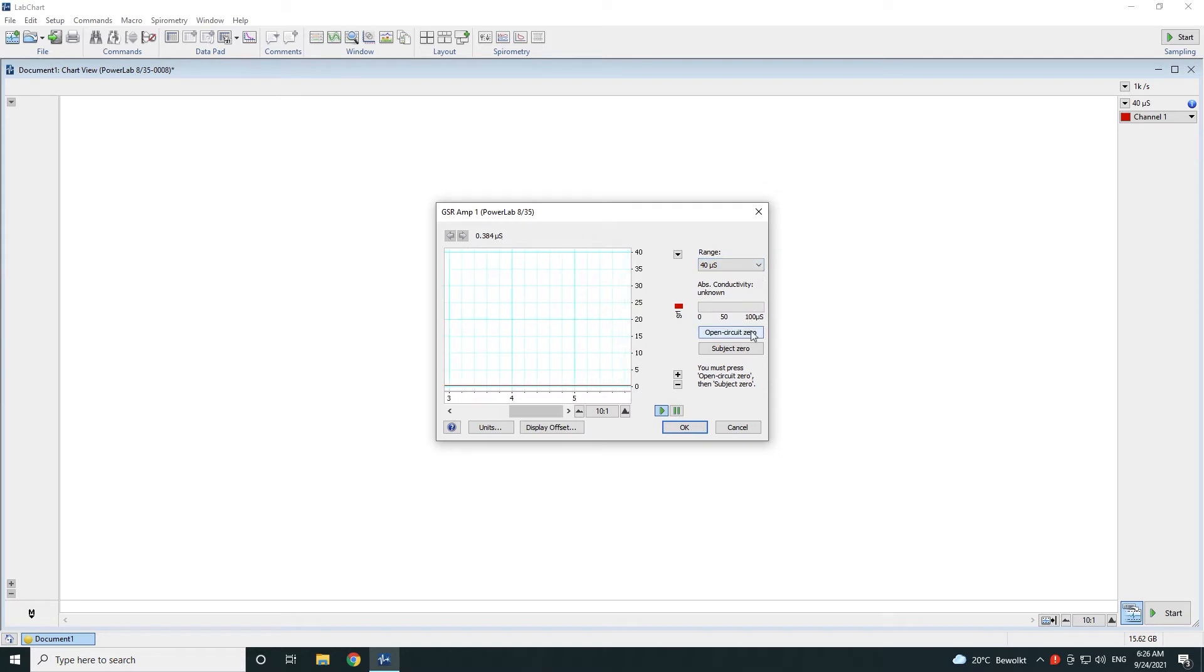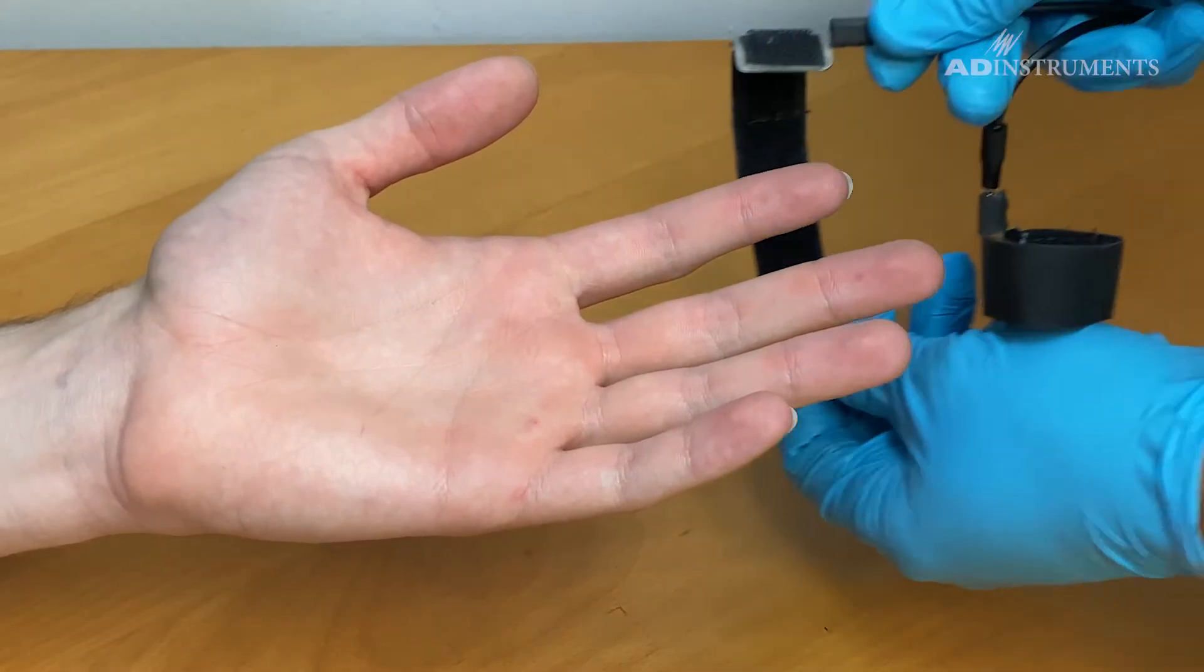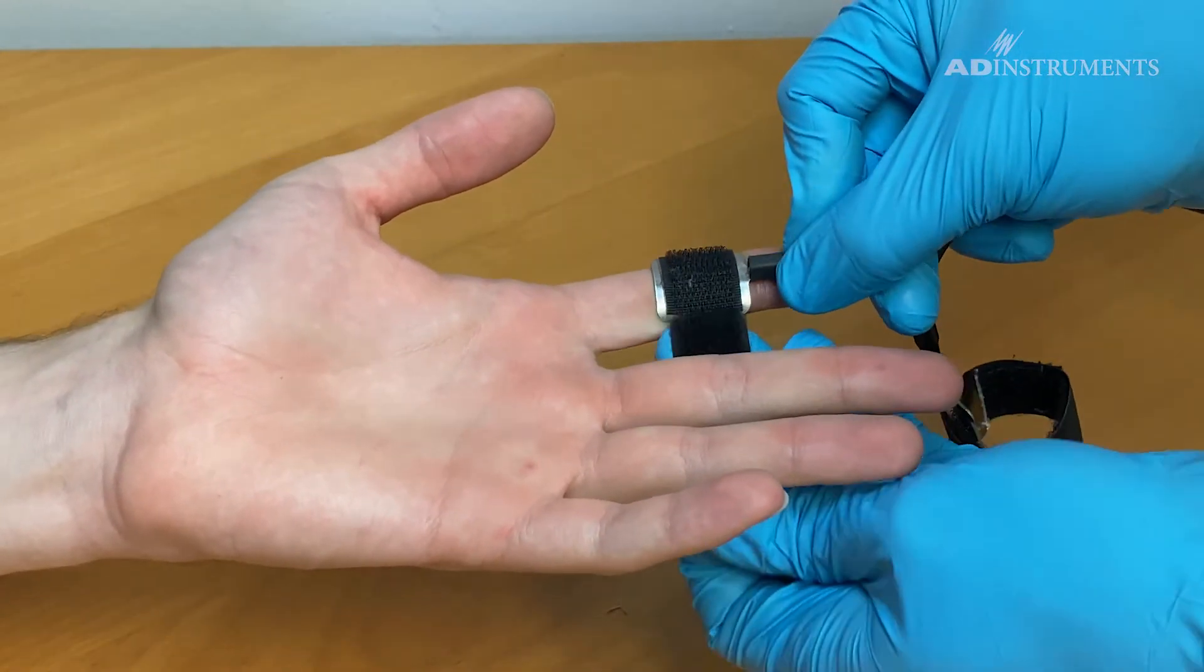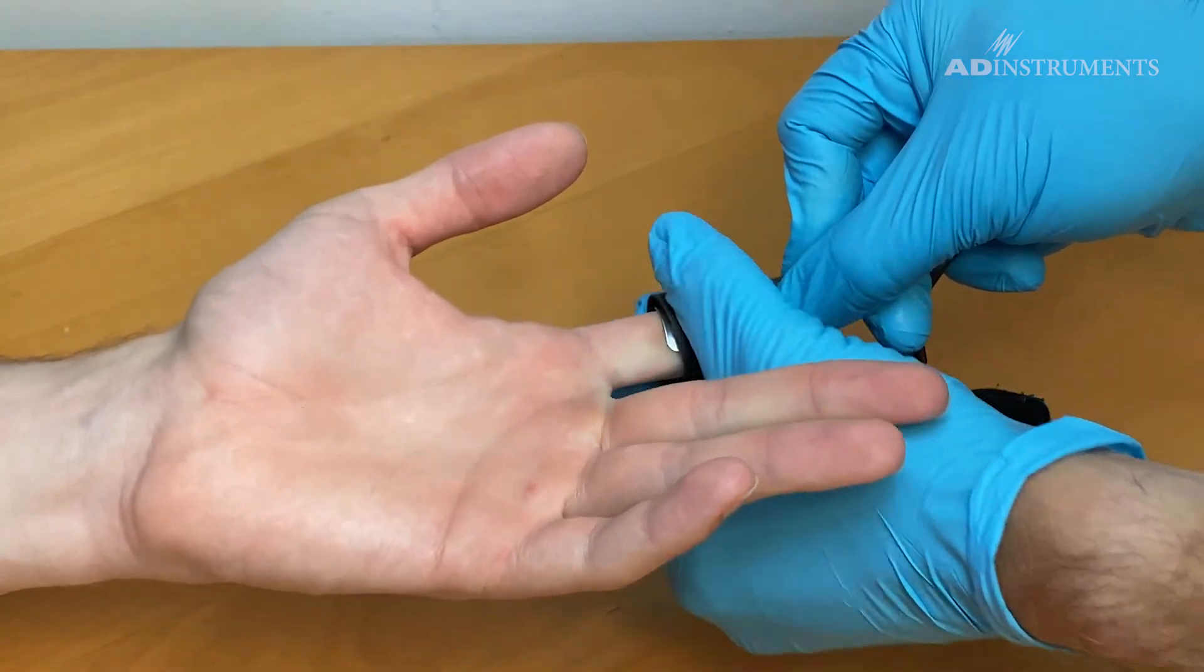Before placing the electrodes on the subject's fingers, click on open circuit zero. Place the electrodes on the forefinger and ring finger to remove any chance of contact between the electrodes.